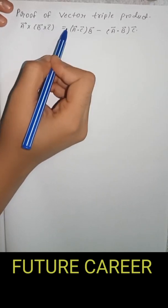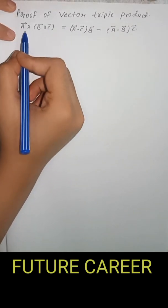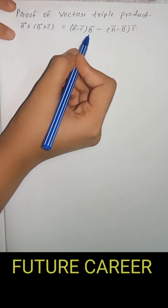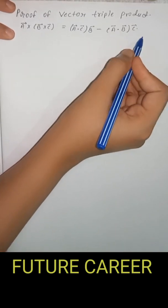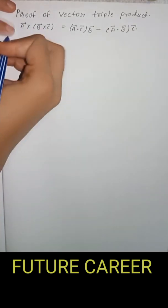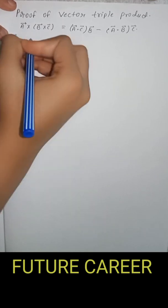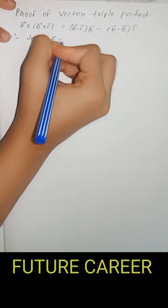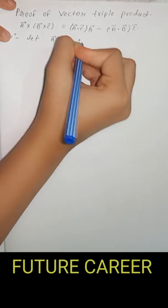Today we will learn how to prove the vector triple product, which means A cross B cross C equals A dot C into B minus A dot B into C. Let's get started. Let A vector equal to Ax i cap plus Ay j cap plus Az k cap.